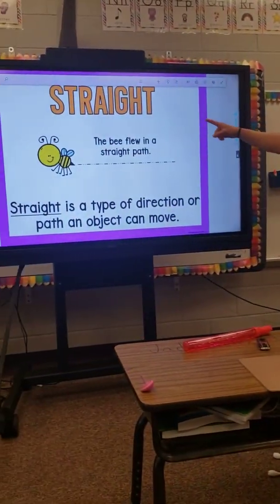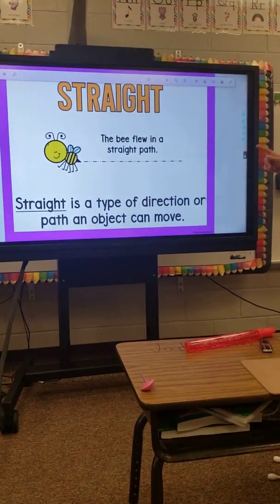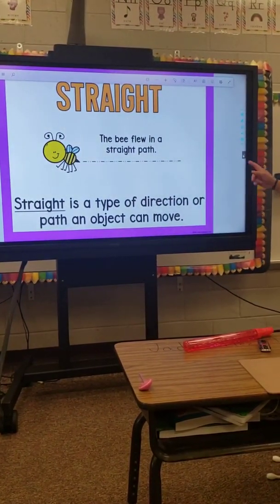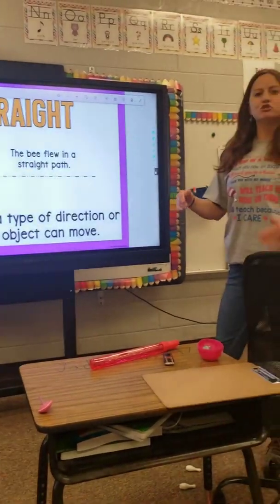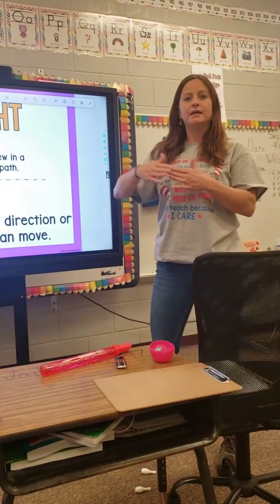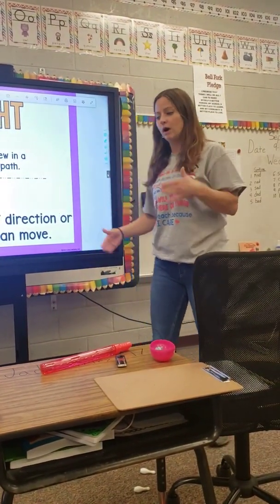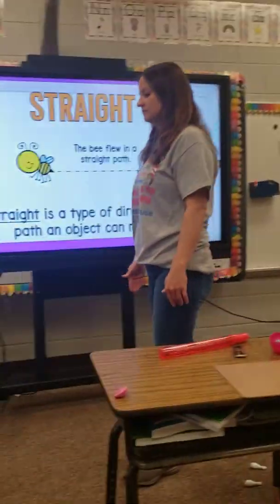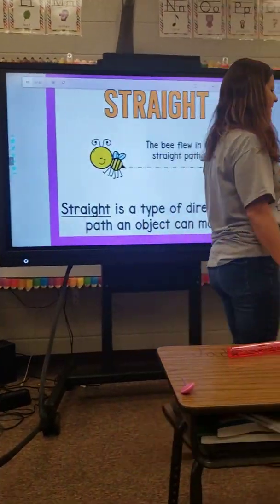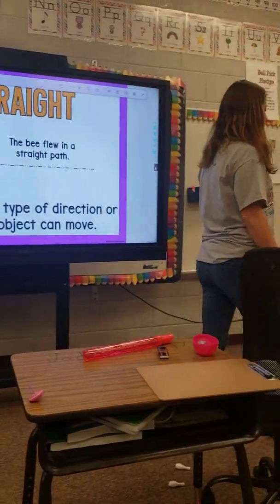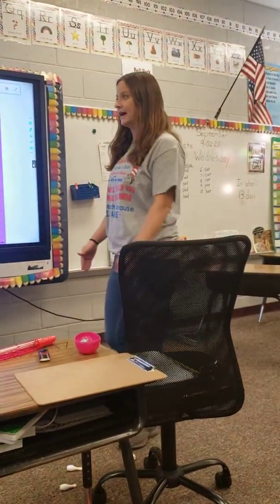Straight. The bee flew in a straight path. Straight is a type of direction or path an object can move. A straight line is normally the shortest distance between two points. If I'm walking in a straight line, or if you've walked on a balance beam or on a piece of tape, that is walking in a straight line.